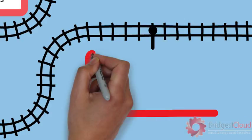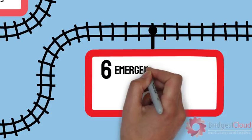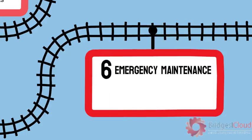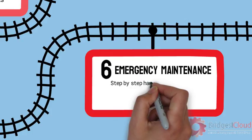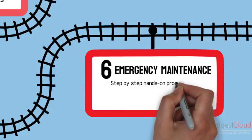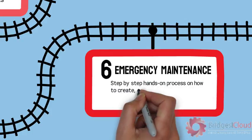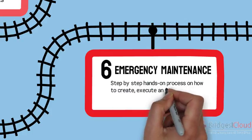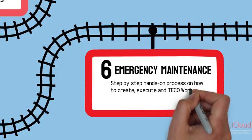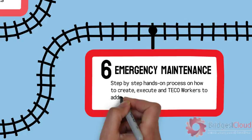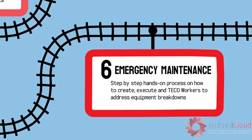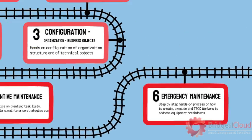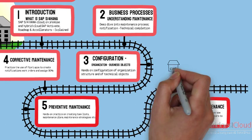The sixth and last module covers emergency work — work that every organization tries to avoid due to associated costs and impact on the business. We again use Fiori Apps to create notifications, plan and assign resources to jobs, and carry the job all the way to technical completion.